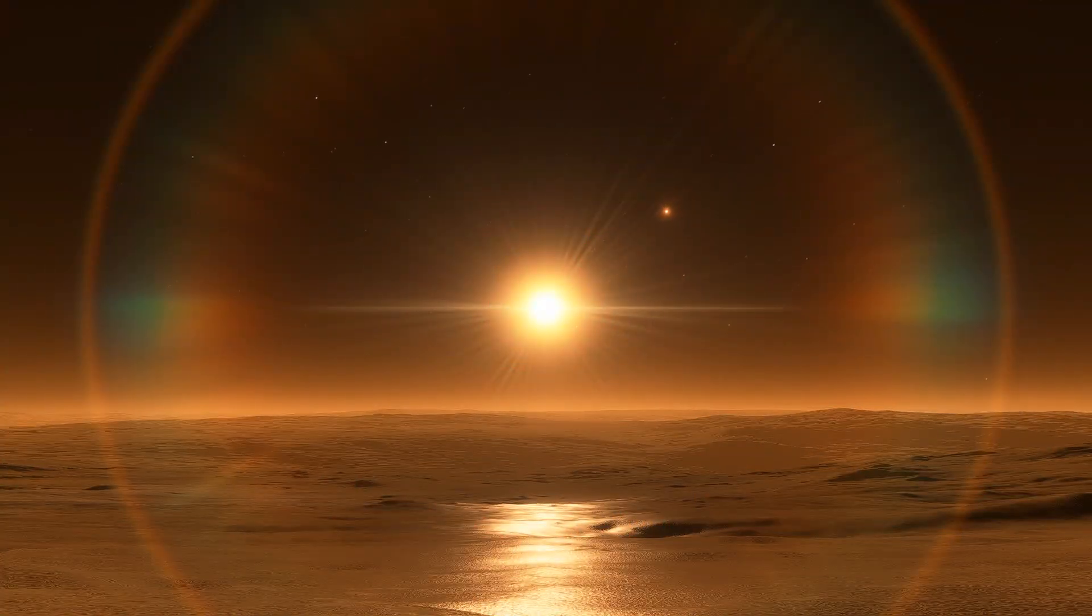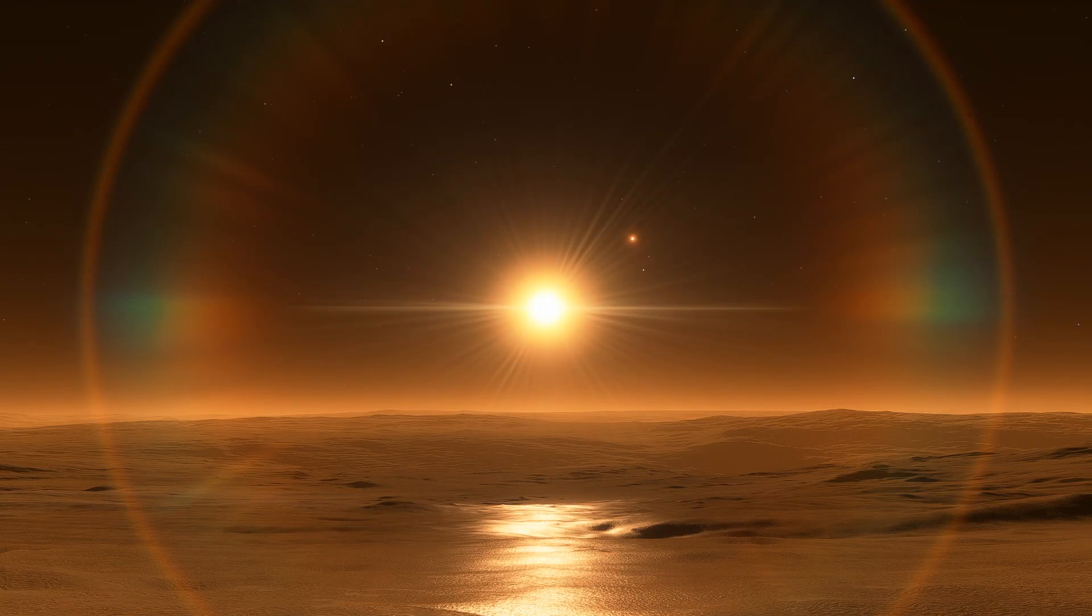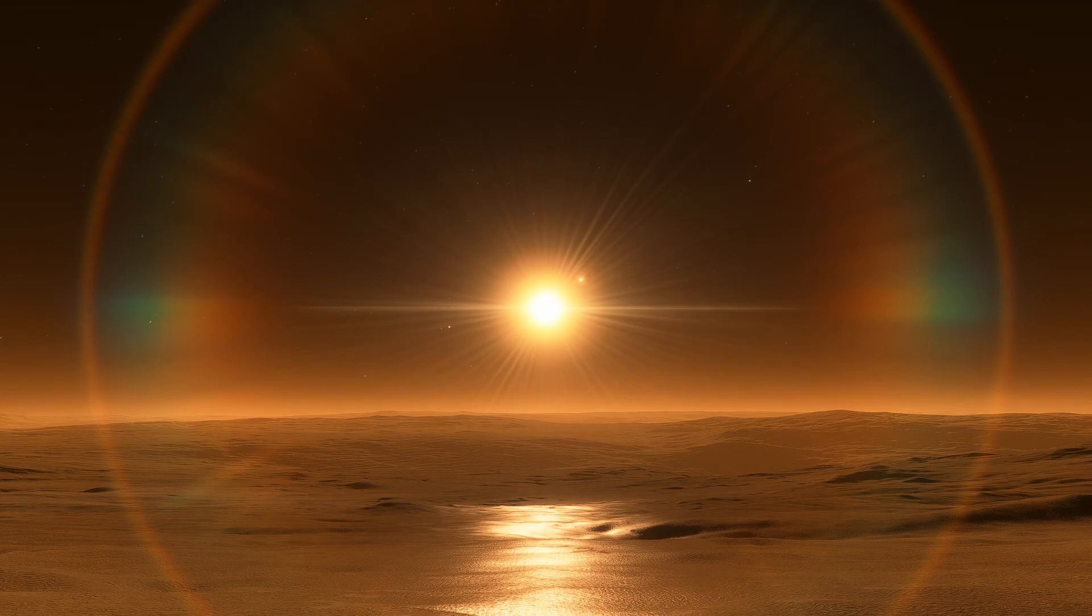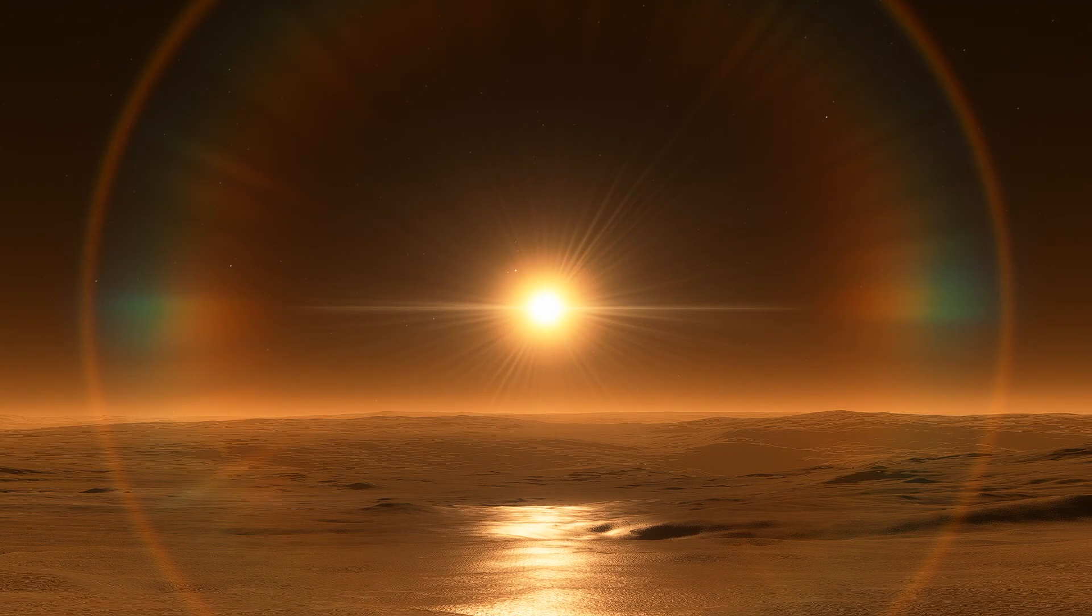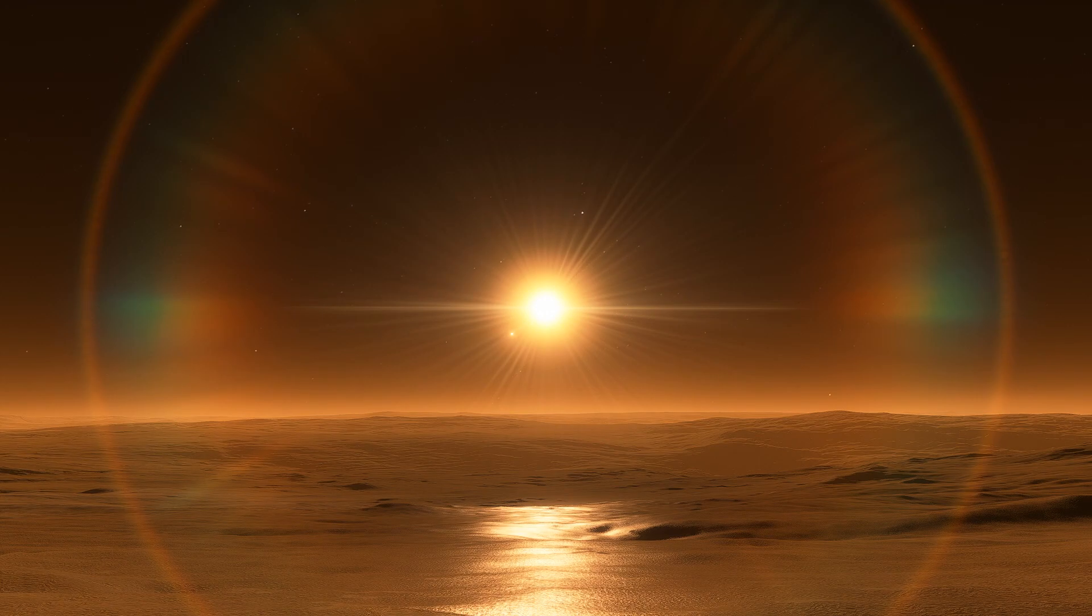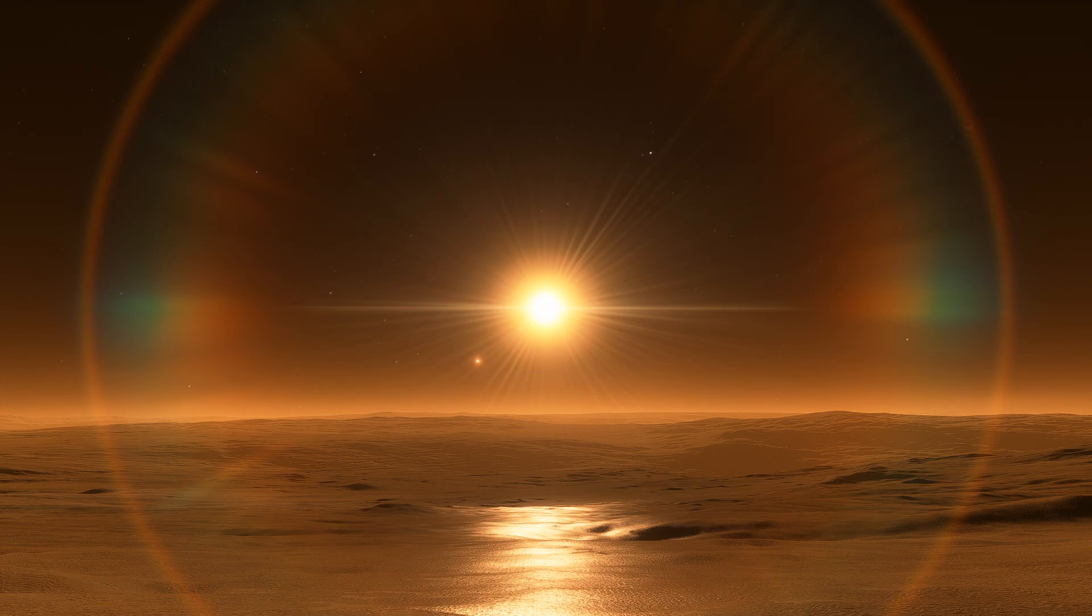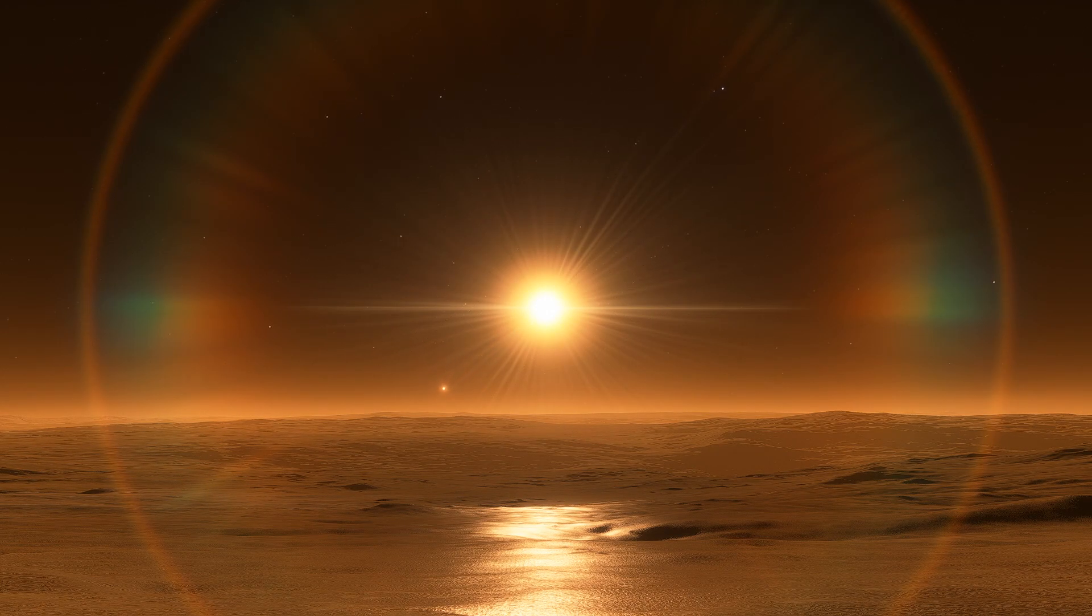Since Proxima Centauri is a red dwarf, any planet in its vicinity will always be turned to it by the same side. This phenomenon is called tidal locking and it would greatly complicate life on Proxima Centauri b if it existed there.